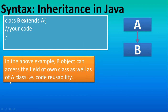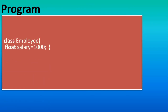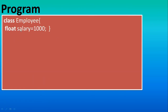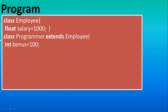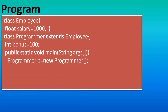The important thing in the above example is that a B object can access data from class A — that is code reusability. Whatever object you create from B, it will take data from class B as well as class A. For example, take the base class Employee having information like salary equal to 1000.